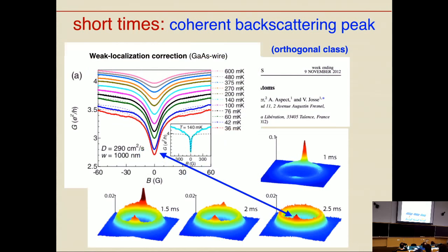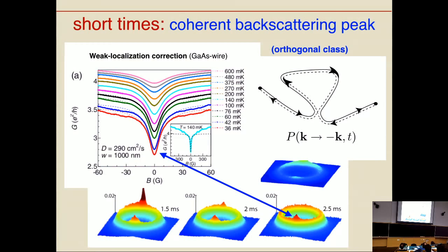This coherent backscattering peak is another view of the well-known weak localization correction in a weakly disordered metal. In a low-dimensional weakly disordered metal, at finite magnetic field the conductance is given by the Drude conductivity. However, at zero magnetic field there are quantum interference corrections that reduce the conductivity. As you apply the magnetic field you dephase this quantum coherence correction and return to the classical Drude conductivity. This arises from electrons diffusively propagating through the disordered metal along self-intersecting paths.